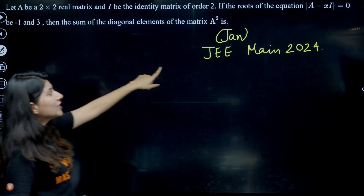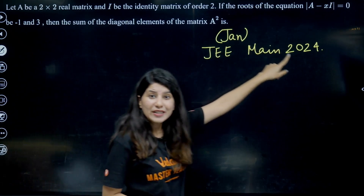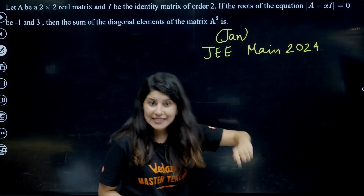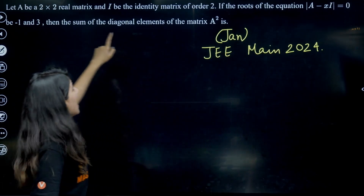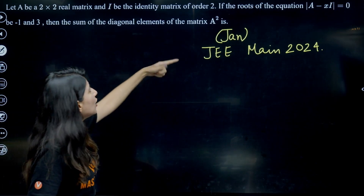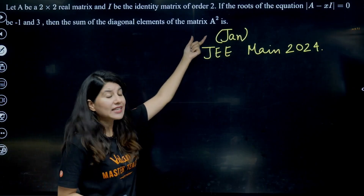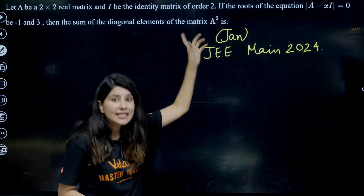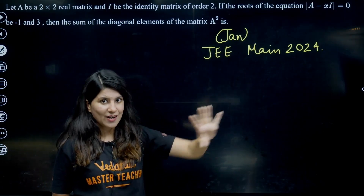The next question is from JEE Main 2024. Again, a 2×2 matrix is involved and something related to A² is asked.